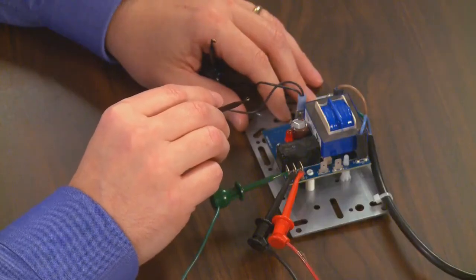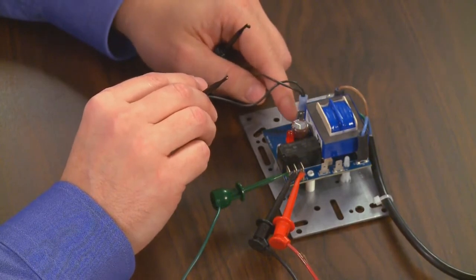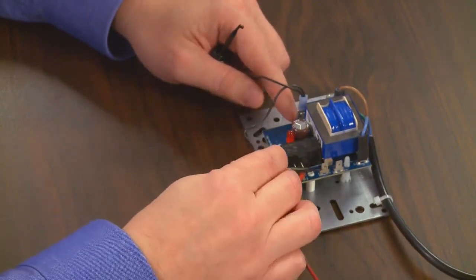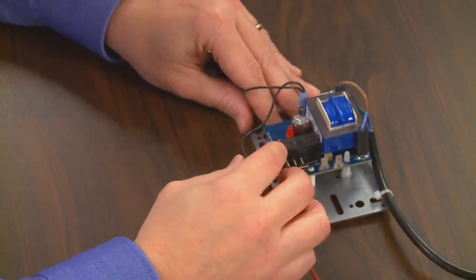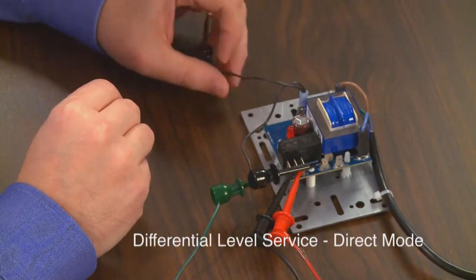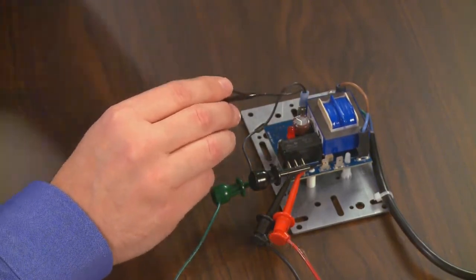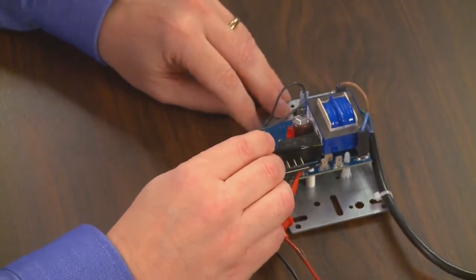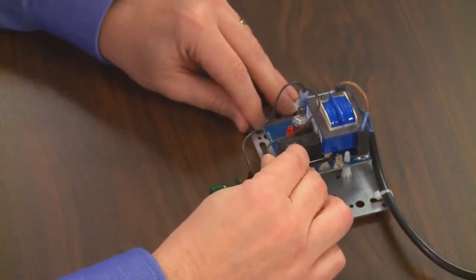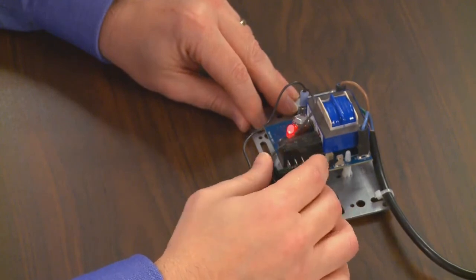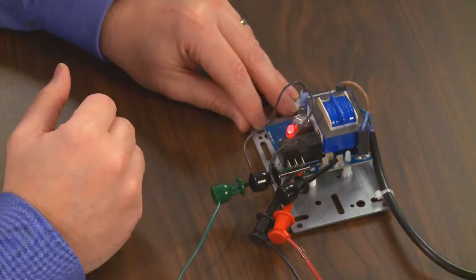Let's simulate differential service. We take our jumper wire from our ground reference probe to our low probe connection. As you see the LED remains off, meaning the relay is in its shelf state or de-energized state. As the water rises to the high probe, simulated by our jumper from the reference point to our high probe connection, you notice the LED turns on. The relay is now energized.